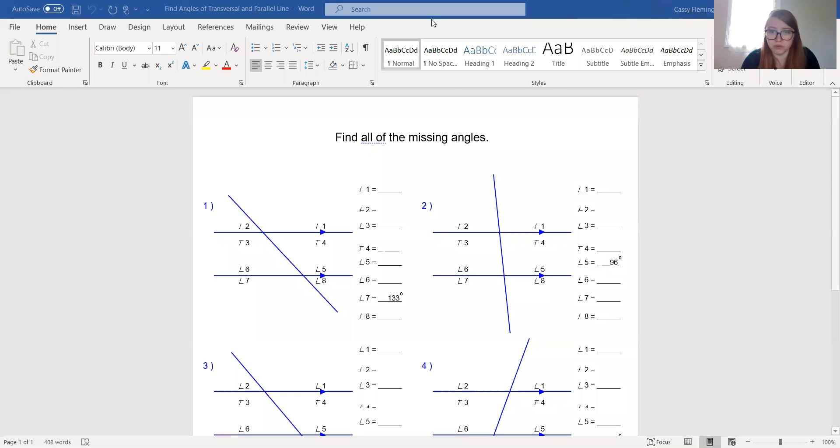I am going to use purple. So let's look at number one. It is telling us that the measure of angle 7 is 133. So I'm just going to write that in there.